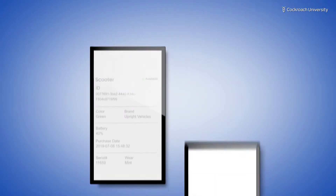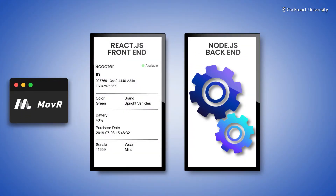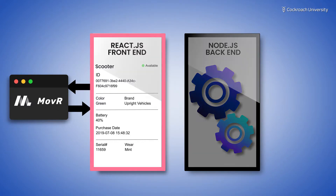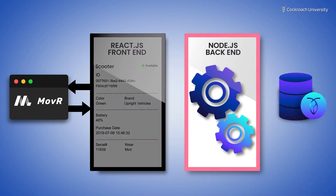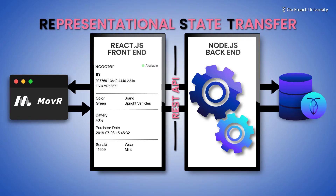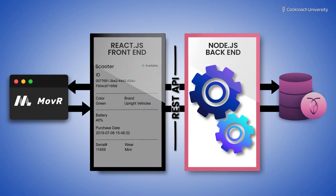At a high level, Mover consists of two components: a React frontend that provides the UI that the user interacts with in their browser, and a Node.js backend that uses Express to handle the frontend requests and TypeORM to interact with the database. The frontend communicates with the backend using a REST API. This course is only concerned with the backend, so that's where we'll be spending most of our time.